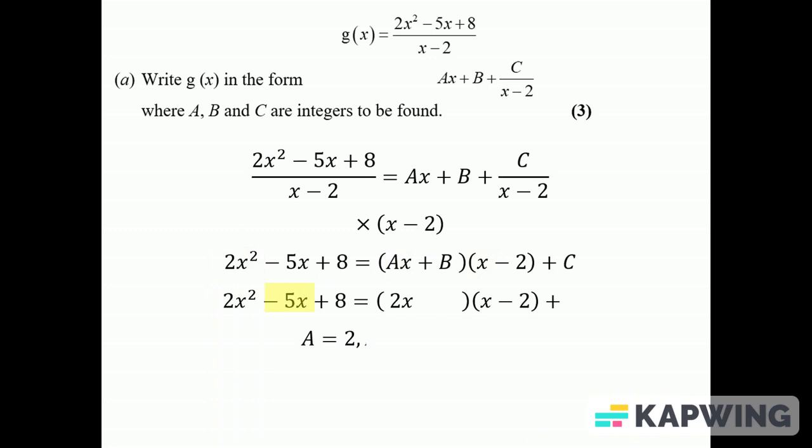I've got -5x on the left hand side, so I need -5x on the right hand side, but I've already got -4x from that 2x. So I need another -x which is going to come from these two terms multiply together, so that B must be -1.